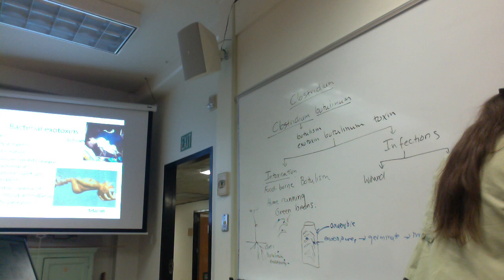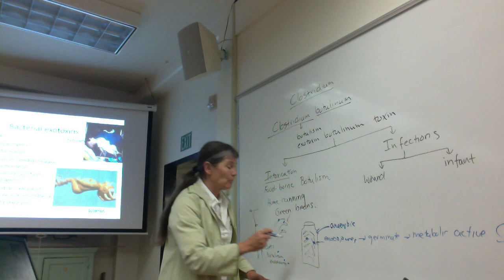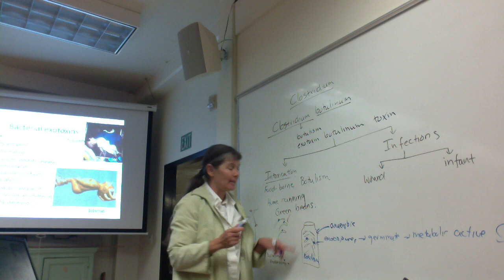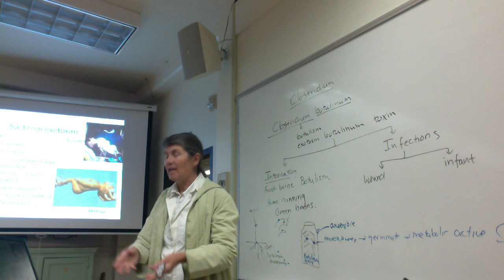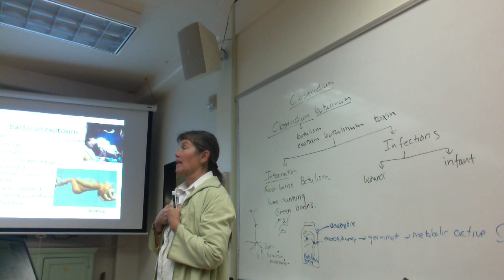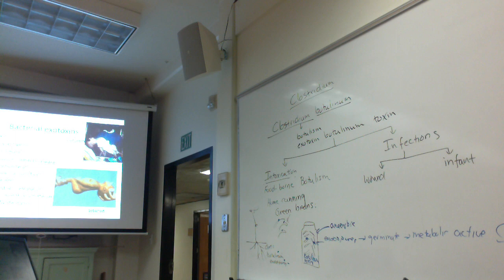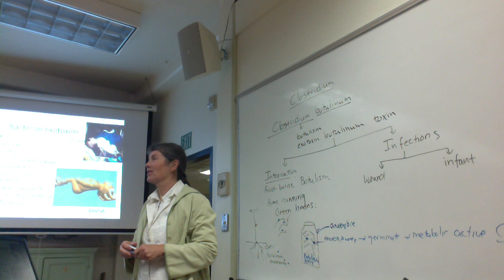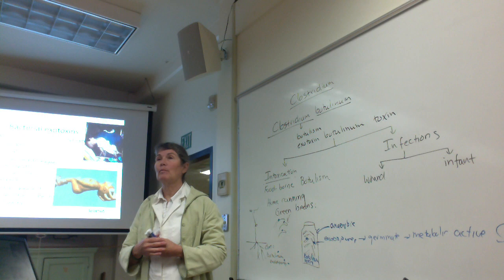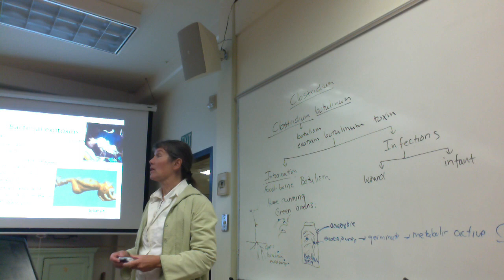Under anaerobic conditions, the endospores germinate, releasing metabolically active Clostridium botulinum, which starts producing botulinum toxin. If you then add those canned green beans to a salad without heating them, you ingest the preformed botulinum toxin. Here's the irony: since botulinum toxin is a protein, cooking the beans thoroughly would denature and inactivate it. The problem only arises when ingesting the beans without heating them.